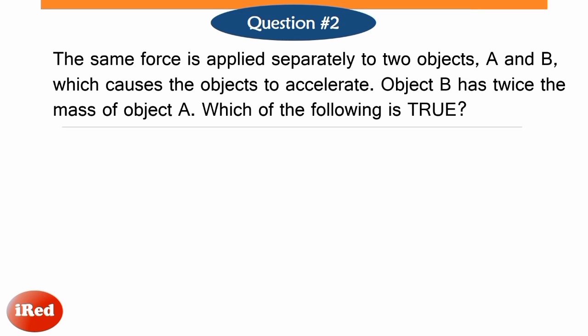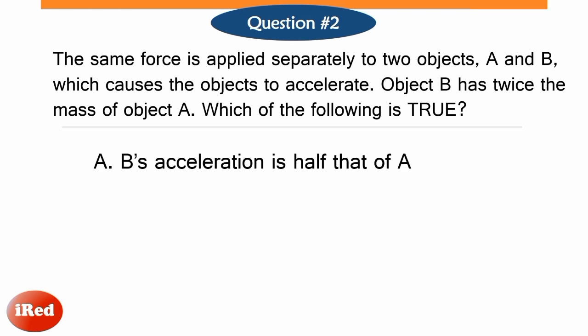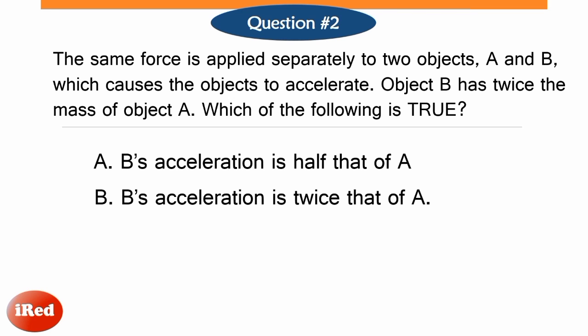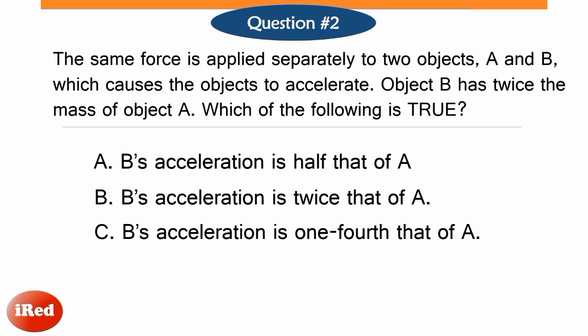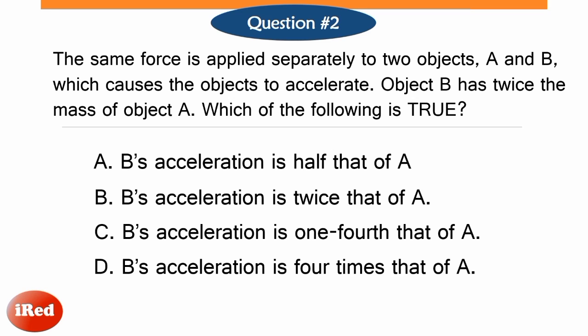The same force is applied separately to two objects, A and B, which causes the objects to accelerate. Object B has twice the mass of object A. Which of the following is true? Letter A, B's acceleration is half that of A. Letter B, B's acceleration is twice that of A. Letter C, B's acceleration is one-fourth that of A. Letter D, B's acceleration is four times that of A.